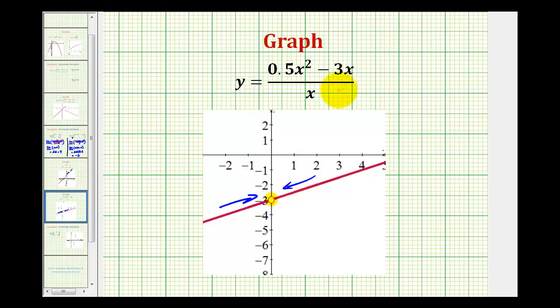So by removing the common factor of x, we in effect remove the hole and therefore determine the limit by performing direct substitution. I hope this was helpful.